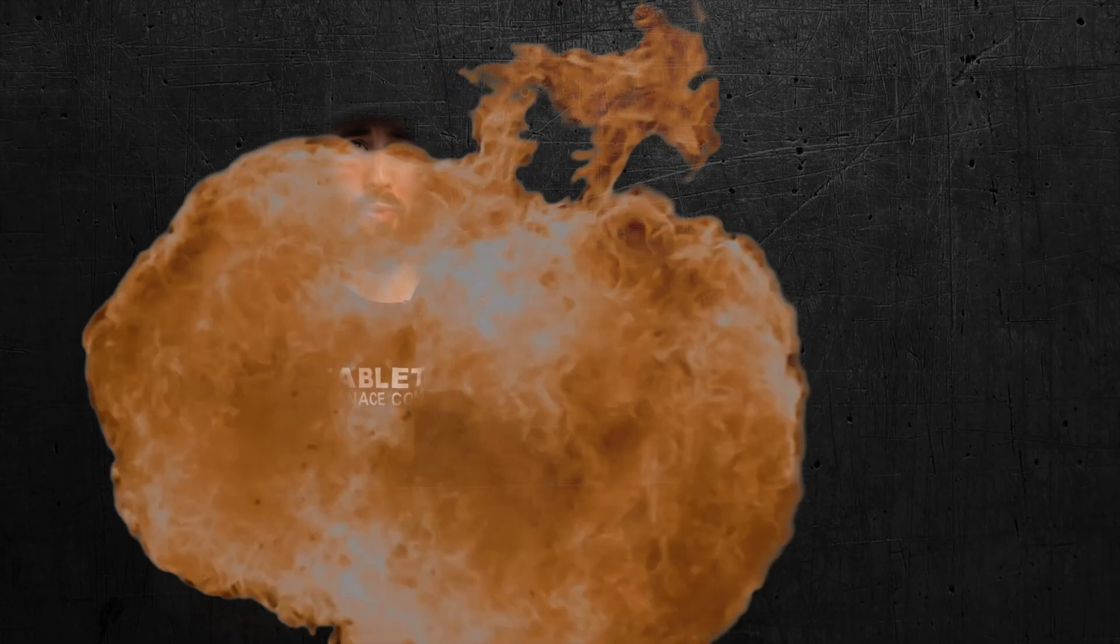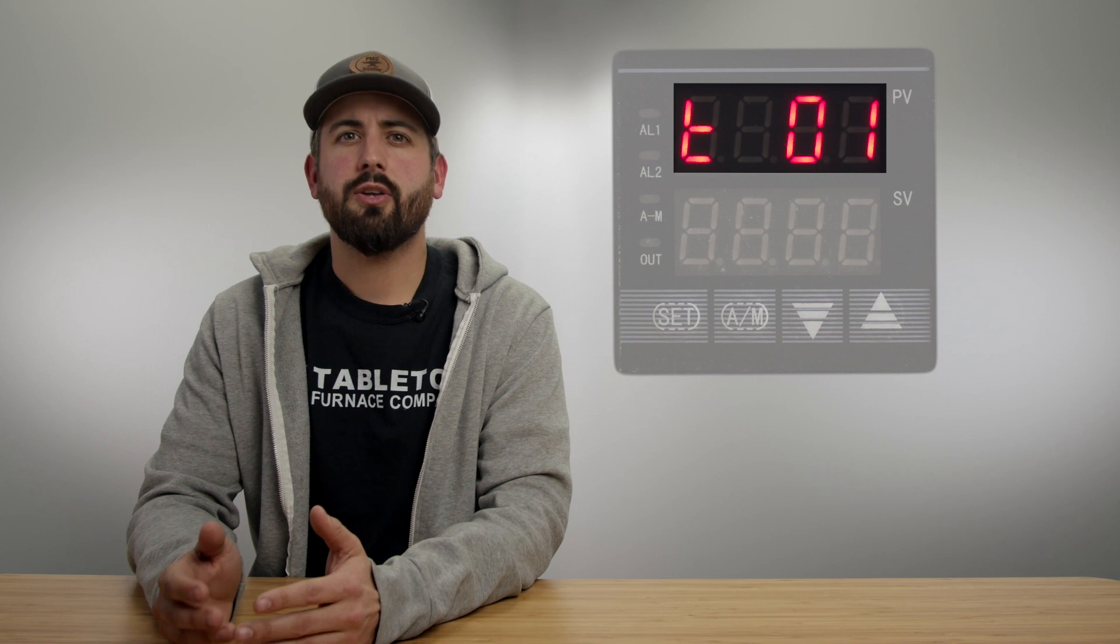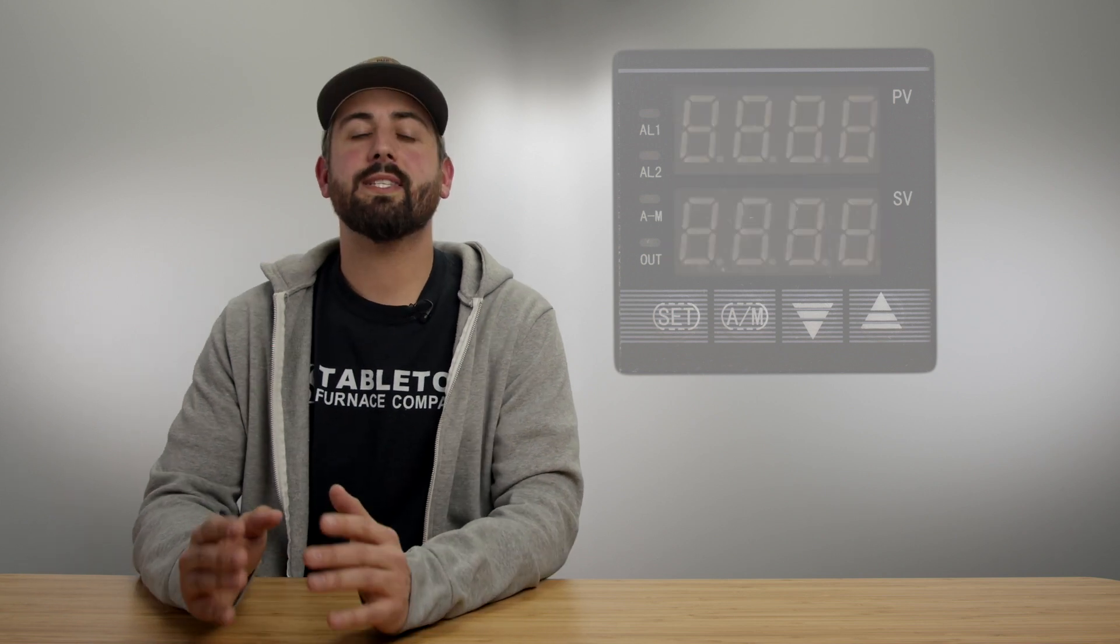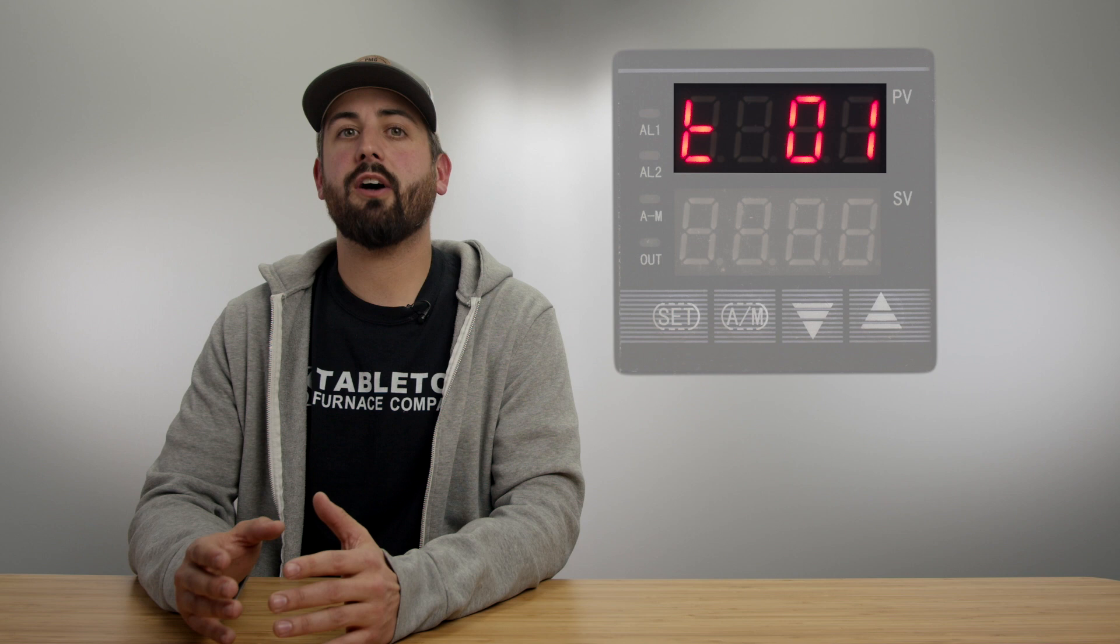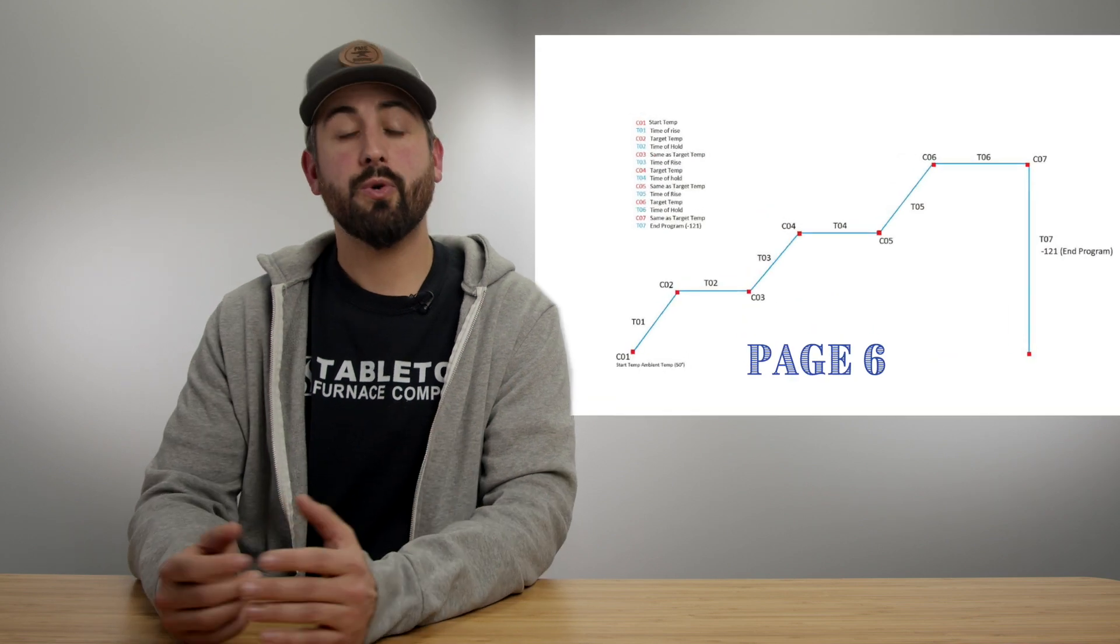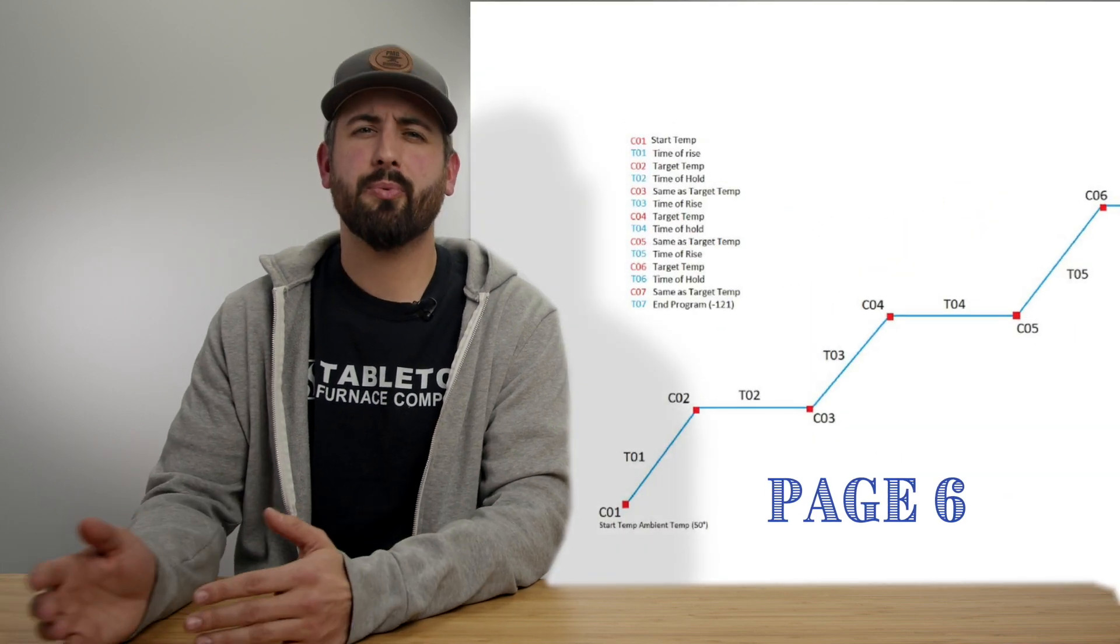We're going to show you how to set the initial burn-off program. These are going to be the same steps you use when you're setting your own programs in the future. Your program is going to consist of a series of C and T codes. Your C values are going to represent temperatures while your T values actually represent times. Remember C codes always represent a temperature and a T value is always going to represent a time.